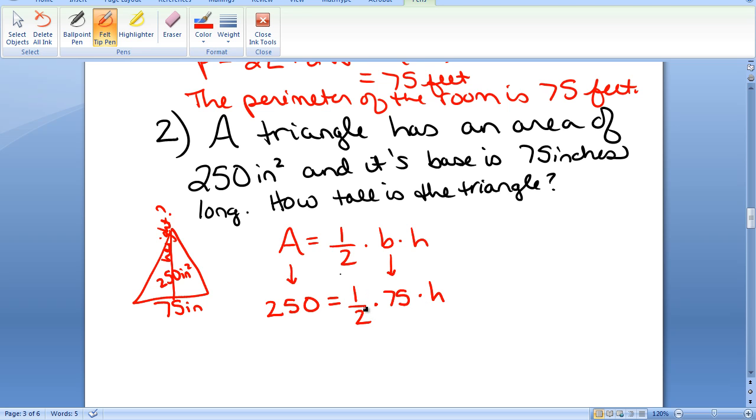So I will go ahead and multiply both sides by 2 to clear away that fraction. So I have 500 equals 75 times h, and then I divide both sides by 75 in order to isolate h. We get h is approximately 6.7 when I divide 500 by 75.